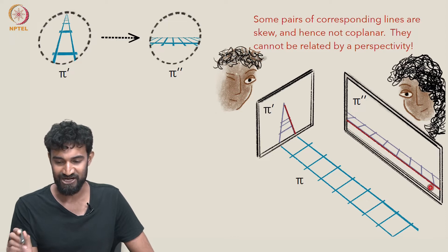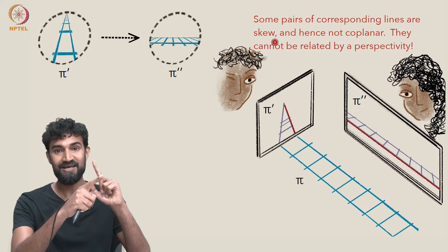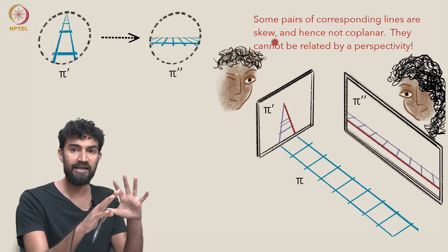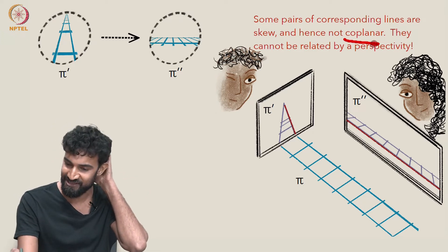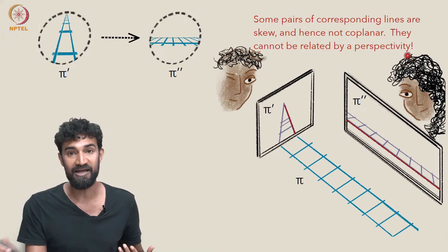This line and this line are actually skew in space. They're skew lines. And as a result, they're not going to be coplanar. No plane is going to contain them. And hence, they simply cannot be related by a perspectivity.